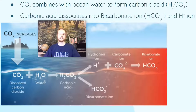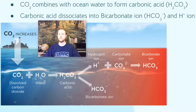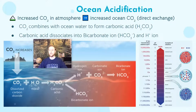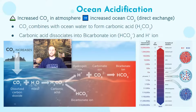What happens next is that this carbonic acid dissociates. Dissociation in chemistry means an H+ ion is given off — that's the definition of an acid: a compound that readily gives off H+ ions. The pH scale measures the concentration of H+ ions, or the willingness of a compound to give off its H+ ion. Carbonic acid gives off the H+ ion, and that H+ ion will combine with a carbonate ion to form bicarbonate. So H+ plus CO3 gives us HCO3.